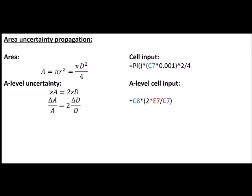At A-level, because we're multiplying and dividing, percentage uncertainties add together. As we've got a squared, that means the percentage uncertainty in area is equal to two times the percentage uncertainty in diameter. We can write the fractional uncertainty in the area epsilon A as the absolute uncertainty delta A divided by A.